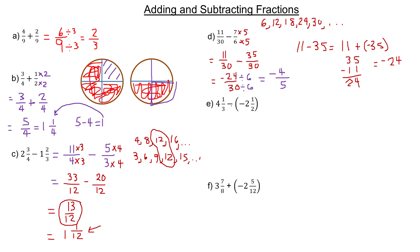E. You have to think of your integer rules. Subtracting negative two and a half would be the same as — I'll rewrite the first fraction here — four and a third. Instead of subtracting, I can take the brackets off and change this into adding the opposite. So this is actually just the same as adding two and a half.